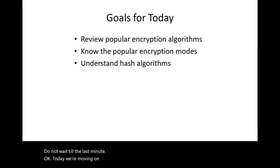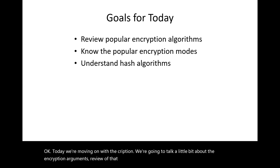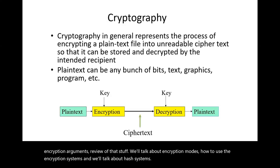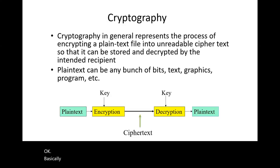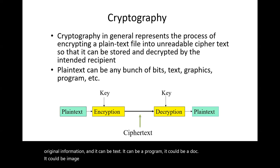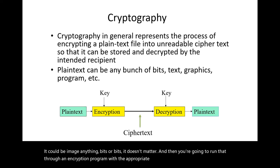Today we're moving on with encryption. We'll talk about encryption arguments, review that material, encryption modes, how to use the encryption systems, and hash systems. Basically, cryptography is where you take plain text — plain text is the name for the original information, and it can be text, a program, a document, an image, anything; bits are bits. You run that through an encryption program with the appropriate key, and out comes ciphertext.